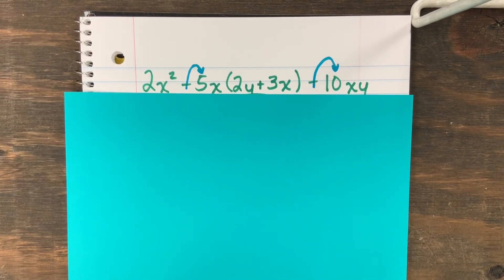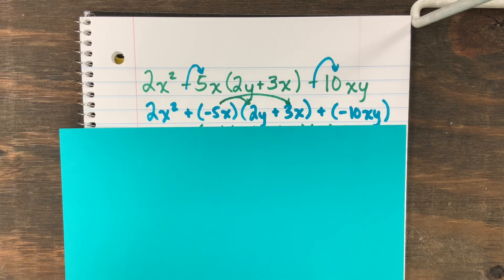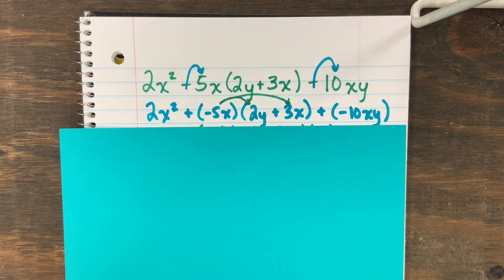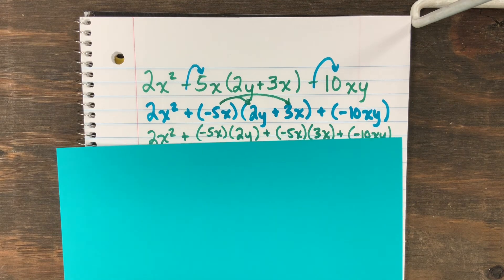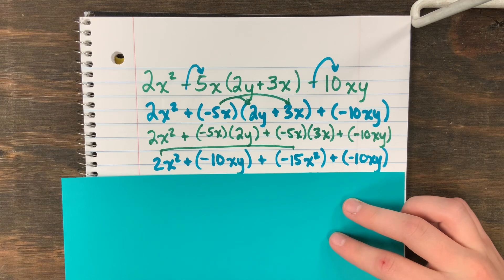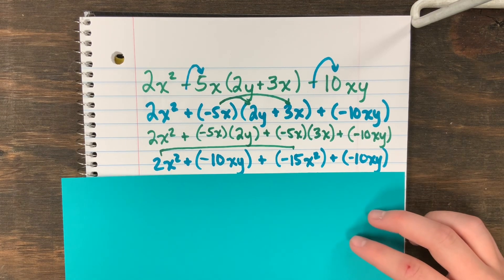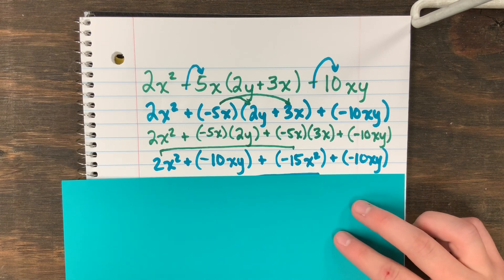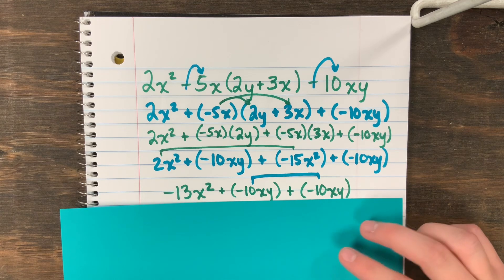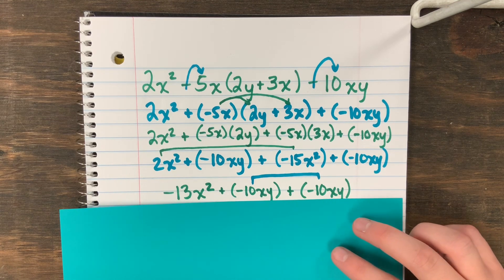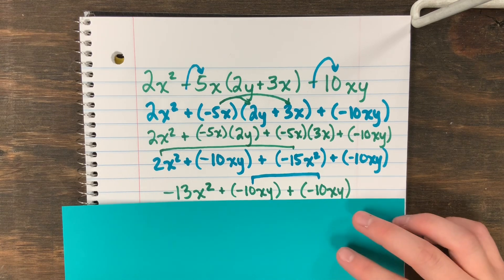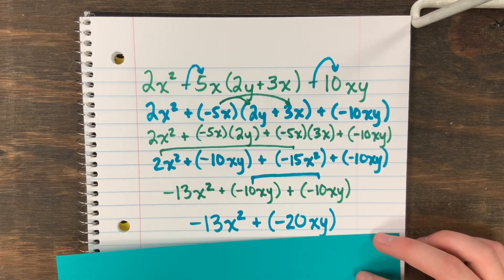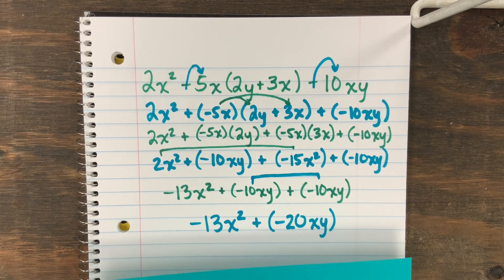Okay, so first you start by adding the opposite with negative 5x and negative 10x. Then since you can't do 2y plus 3x, you have to do distributive property and do negative 5x times 2y and then negative 5x times 3x. Then you do 2x² plus negative 15x². Then you do negative 10x plus negative 10x, which is negative 20x, and then you get negative 13x² plus negative 20x.